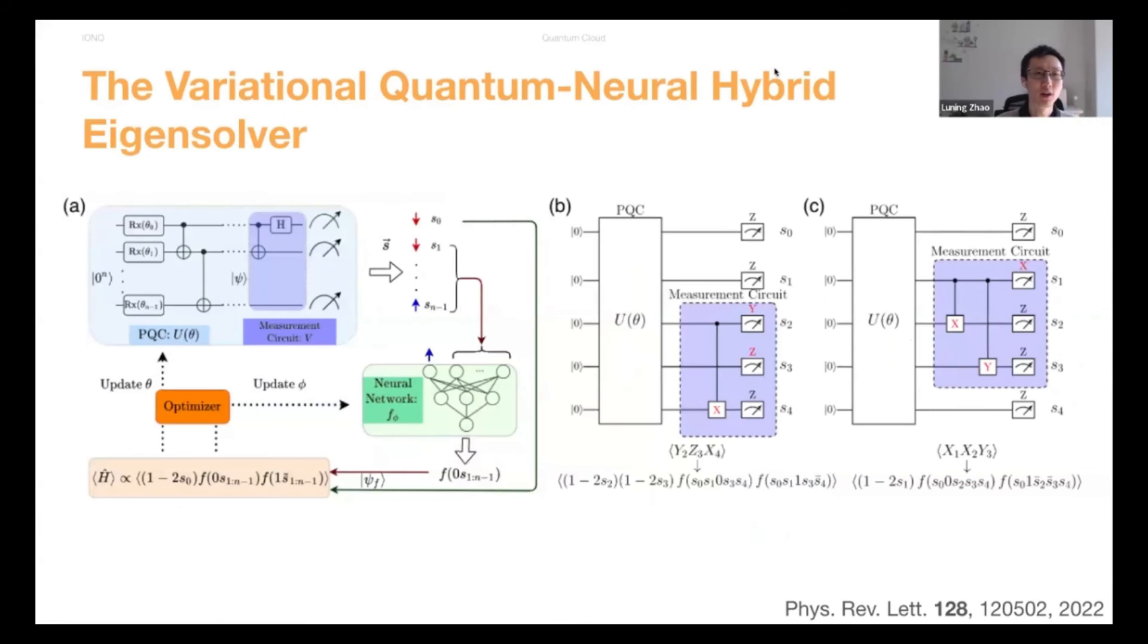The variational quantum neural hybrid eigensolver trying to mitigate the errors of the hardware by adding a different additional layer to the variational quantum eigensolver. And this layer is represented by a neural network. So here is the workflow for that. You still measure a parameterized quantum state on the quantum computer. But then after you do the measurement, instead of directly using this measurement to compute energy, you first use this measurement as an input to a neural network.